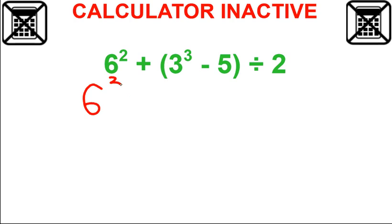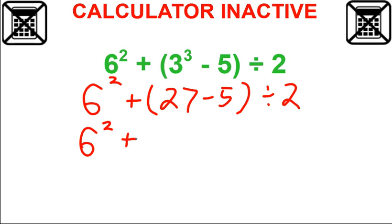So we still have our six squared plus 27 minus five divided by two. We keep going inside the parentheses. So we got six squared plus 27 minus five is 22 divided by two.